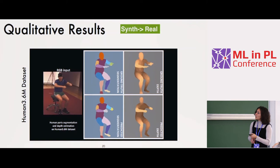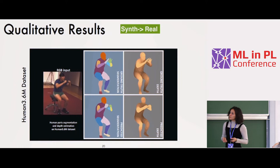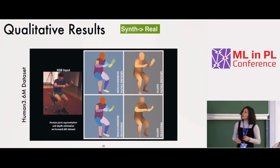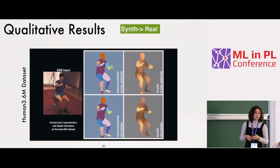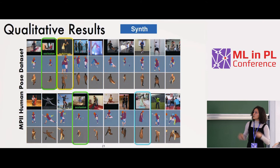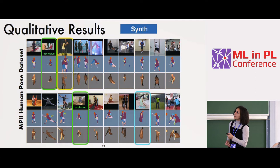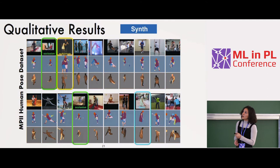Looking at qualitative results: predictions are shown below and ground truth above. Hands and some precise parts are not so accurate because it's a very low-dimensional heat map of 64 by 64 pixels, shown upsampled. On more challenging real images, training only on synthetic, we note that even without occlusion in training, thanks to the CNN architecture we can deal with some occlusions.